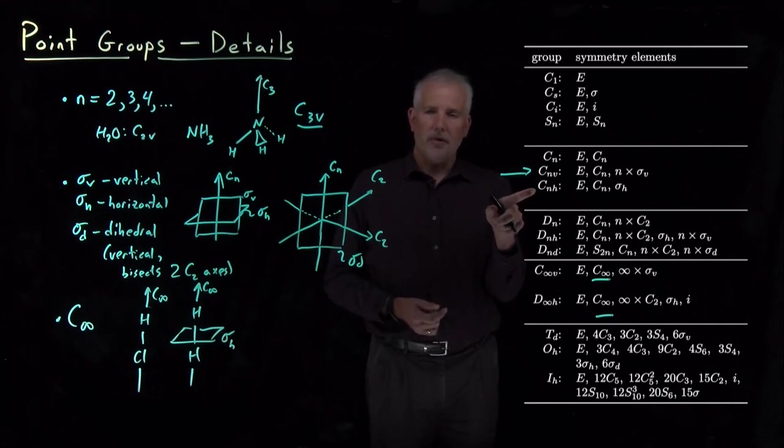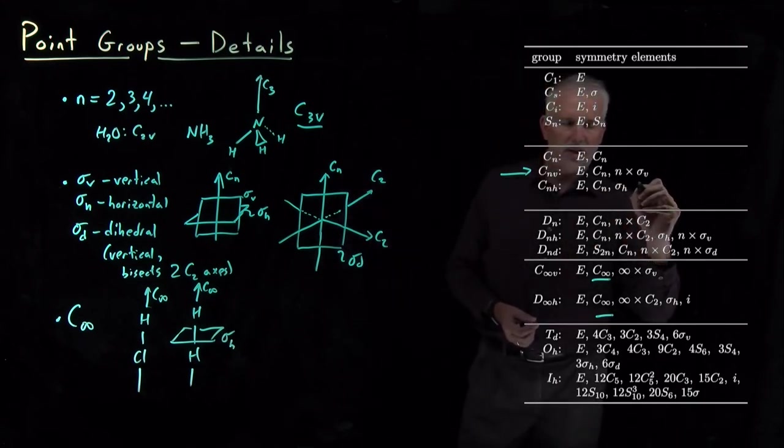Are a little bit different for even values of N than they are for odd values of N. So the CnH in particular.